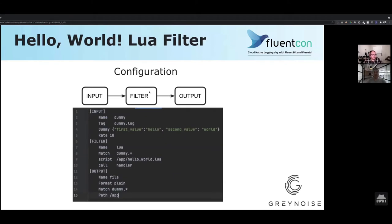We're going to write the very simple Hello World Lua filter. But before writing code, we need to configure FluentBit to use our Lua filter. In the context of the FluentBit pipeline, we're looking at three steps: input, filter, and output. For our example, the input uses the dummy mock input that FluentBit provides. In line four you generate a random message and tell it the frequency of emission per second. The key-value pairs are: first value 'hello', second value 'world'.